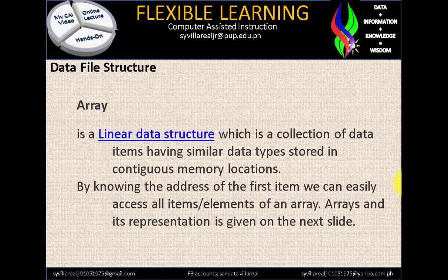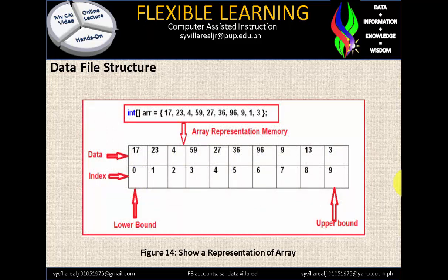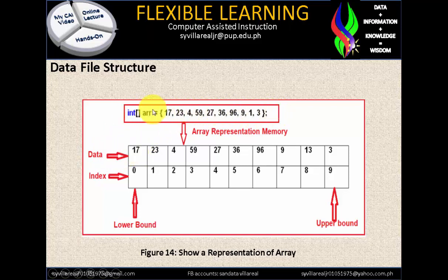Arrays and their representation is given on the next slide. In Figure 14, it shows a representation of an array. The declaration in programming is int, which is the array variable, equals to open curly brace with values like 17, 23 — comma separates each data — ending with a curly bracket and a semicolon. The memory must give its index in an array, and that is what you call the lower bound.